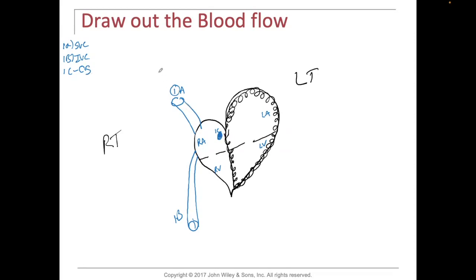One A, the superior vena cava, brings deoxygenated blood in from the head, neck, right arm, and left arm into the right atrium. From one B, the inferior vena cava, blood comes in from the abdominal area and the lower extremities up into the right atrium. The coronary sinus is where all the deoxygenated blood from the heart itself finds its way into the right atrium.